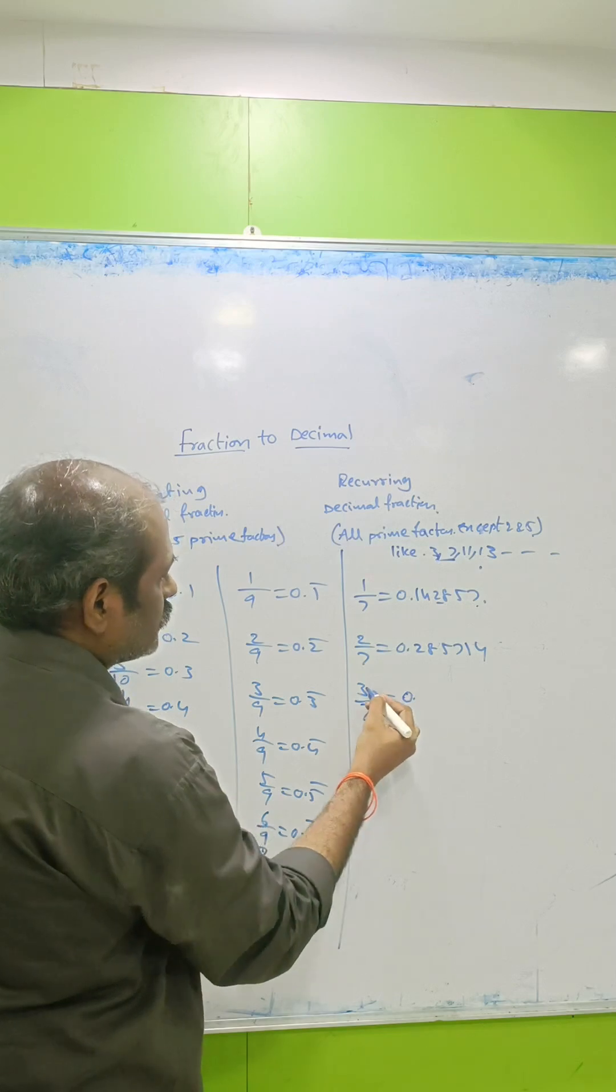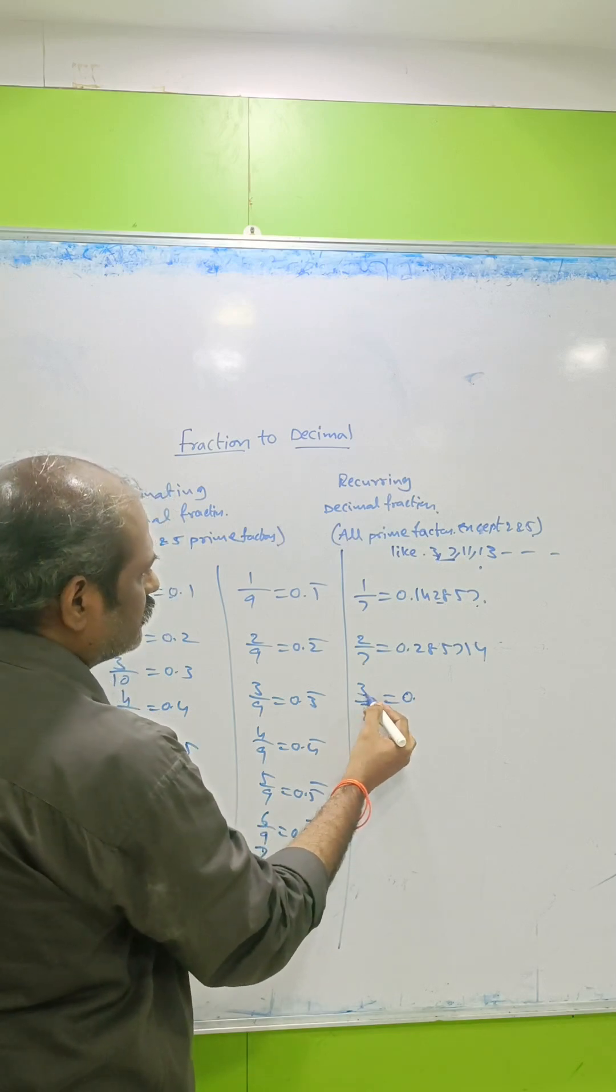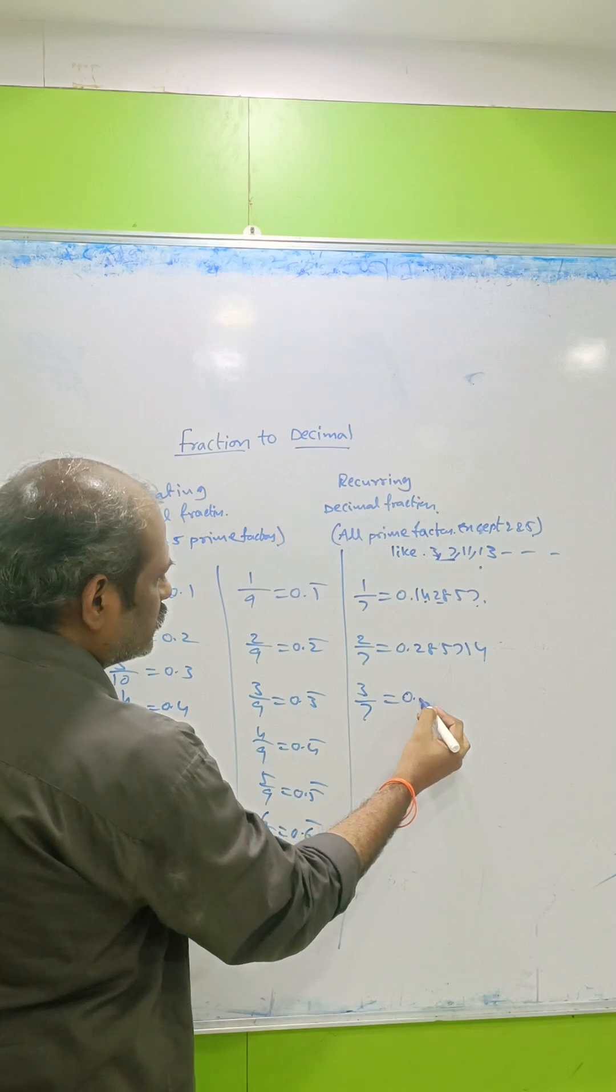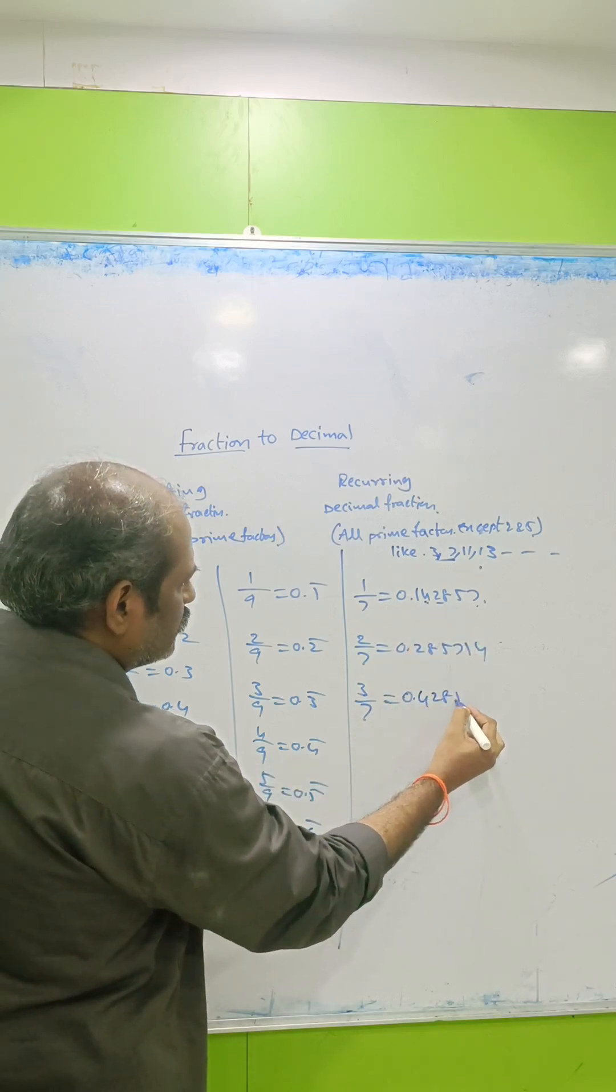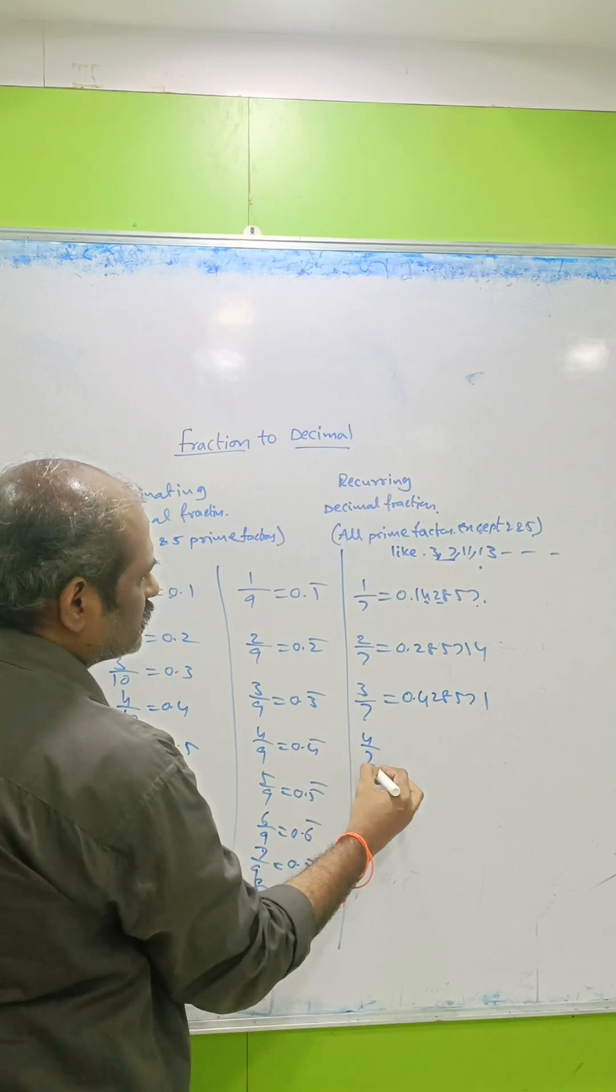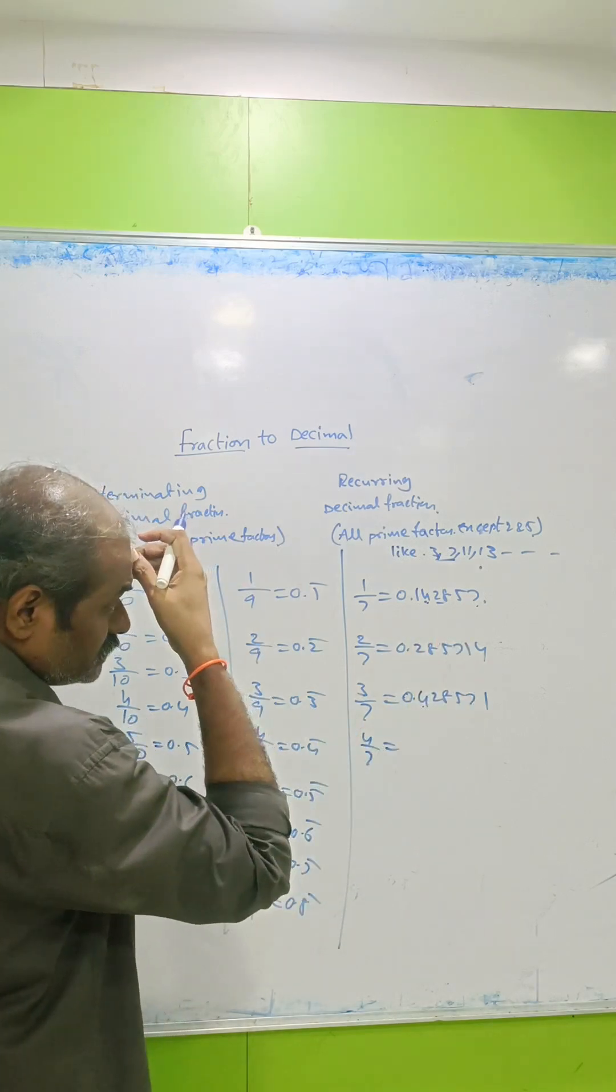For 3/7, after 3 we're getting 4, so the decimal starts with 4: 0.428571. For 4/7, 4 is already used, so after 4 we get 5. The decimal starts with 5: 0.571428.